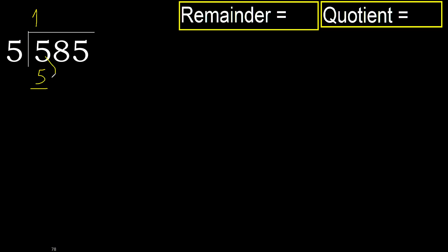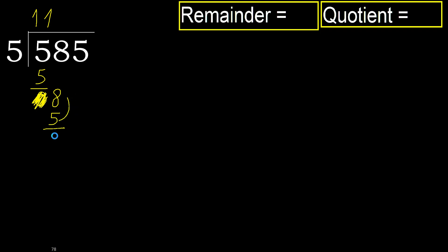5 minus 5 is 0. Bring down 8. 5 multiplied by 2 is greater, 5 multiplied by 1 is 5, which is not greater. Subtract. Bring down 35. 5 multiplied by 7 is 35, which is not greater.